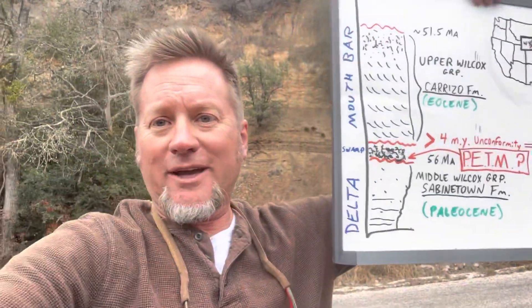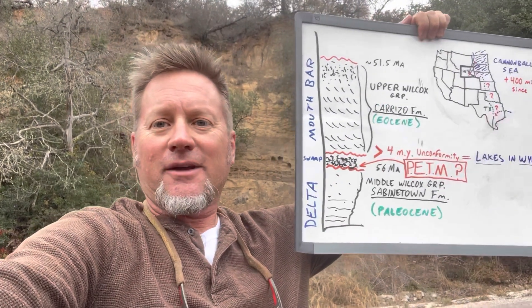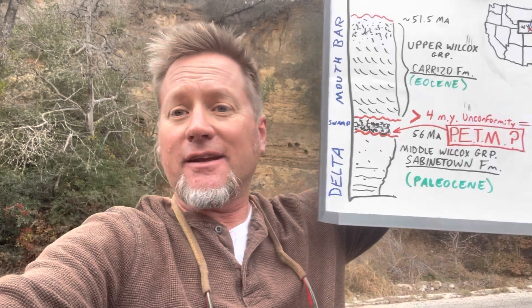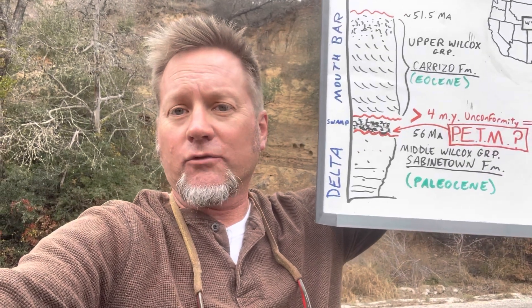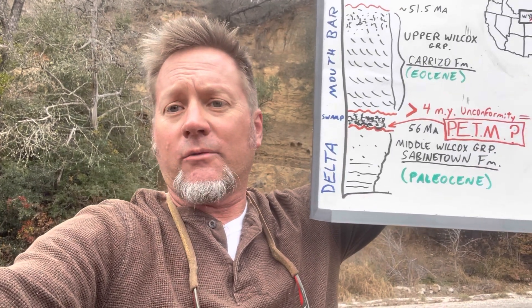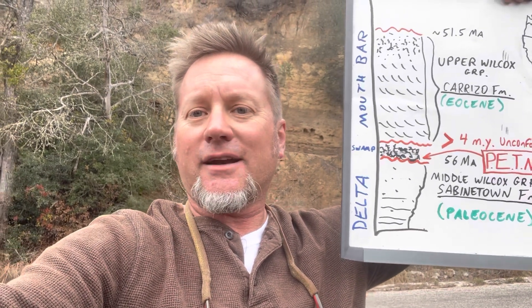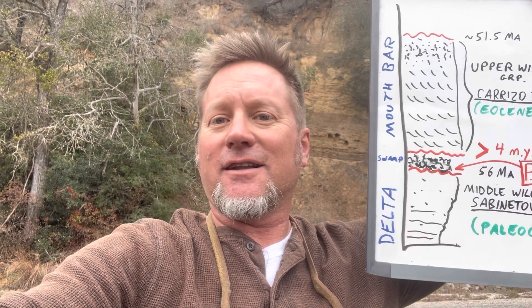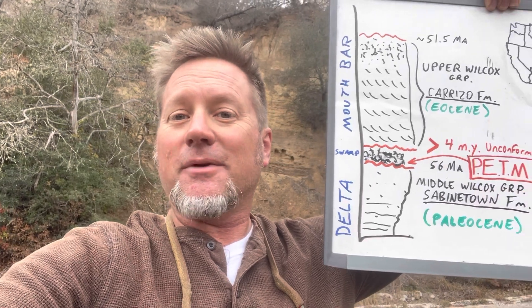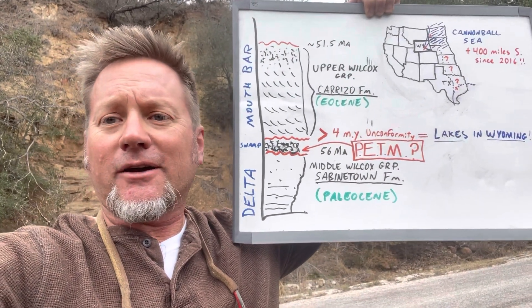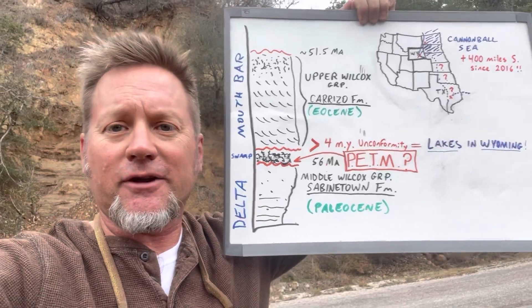With an ever-present whiteboard, we can kind of line it up with the outcrop. The Carrizo is this cross-bedded material — it is the upper Wilcox group. The lower Wilcox is not exposed here, but we do have the middle Wilcox, which is that Paleocene Sabinetown with that grayish silt. This is actually lining up pretty well and representing possibly the PETM — the Paleocene-Eocene boundary. We'll be talking more about that as it relates to the Wyoming outcrops I've already covered in other videos.